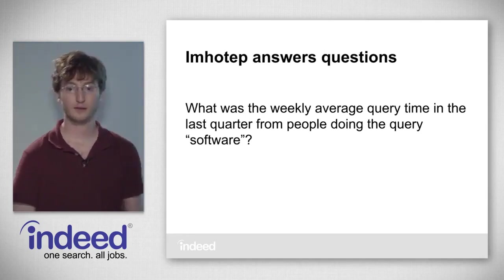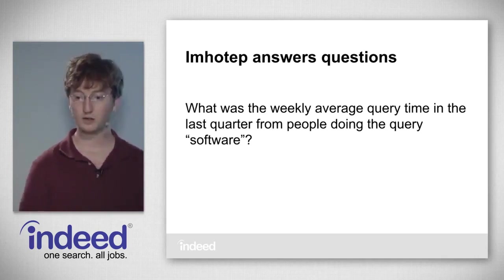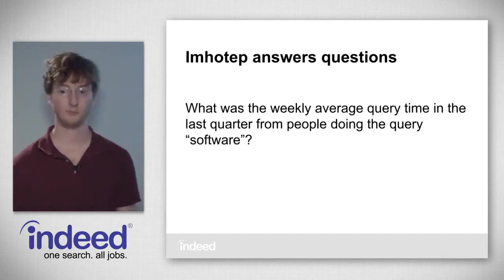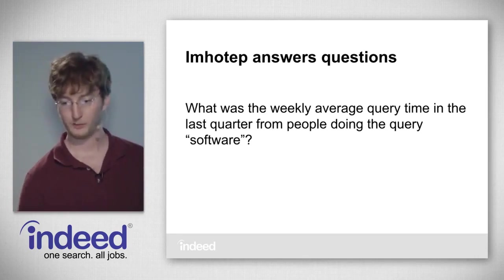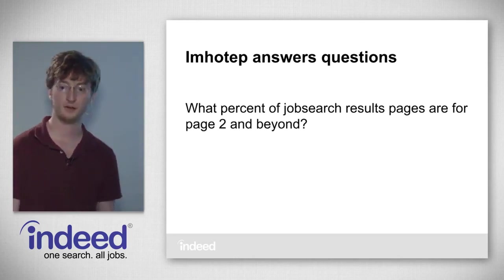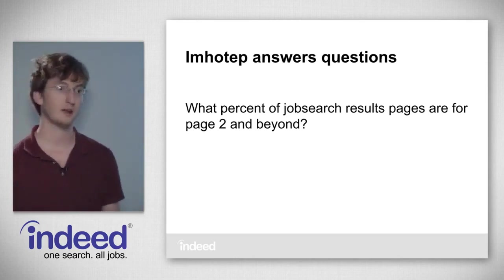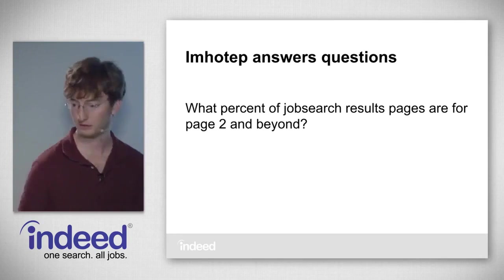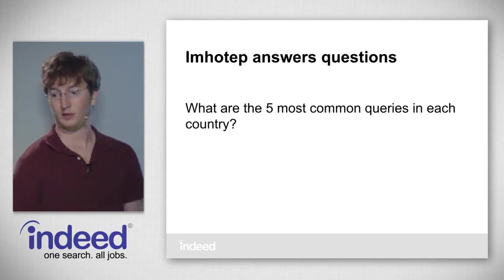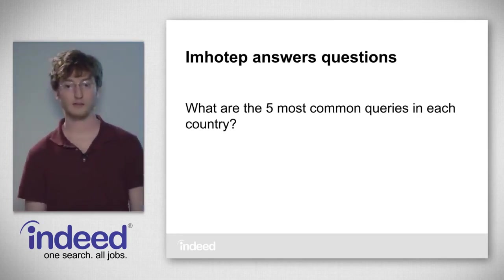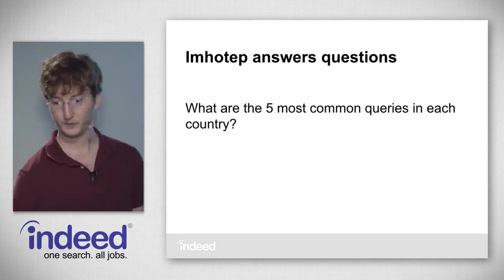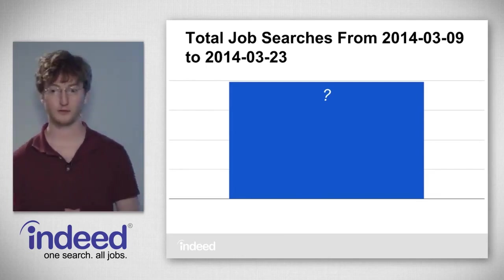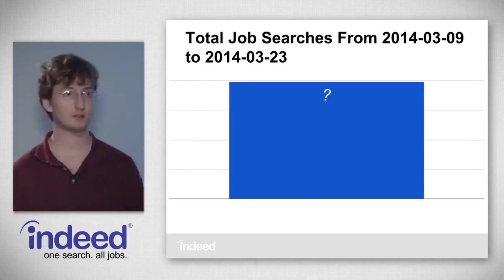Emotep is a system we like to think of as one that answers questions. One question you might ask is: what was the weekly average query time in the last quarter from people doing the query 'software'? Emotep can also answer: what percent of job search results pages are for page 2 and beyond? And it can answer: what are the top 5 most common queries in each country?